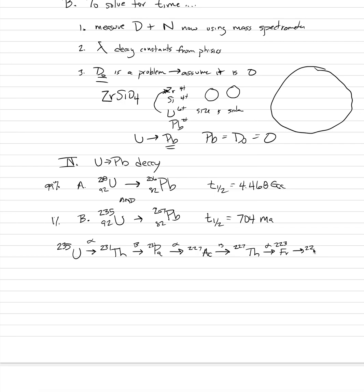Francium goes to radium — that's Ra-223. Radium goes to astatine, symbol At, At-219. Astatine decays — that one's a beta decay since the mass stays the same — to radon. Radon then undergoes alpha decay to bismuth. If it's alpha decay, the mass drops by four, giving us bismuth-215. Bismuth goes to polonium.